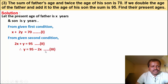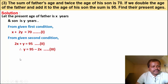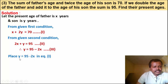Now simplify equation 2 in the form of y: y is equal to 95 minus 2x. This is equation number 3.